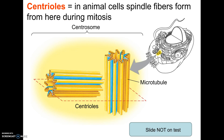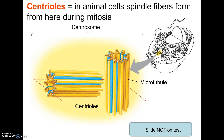Here is a picture of centrioles, the little T-shaped things. Animal cells have these — they are little T-shaped things on the edges of the cells. Plant cells don't have these, and you won't be tested on them.